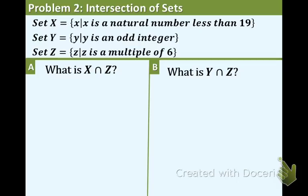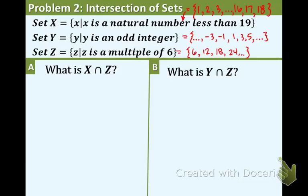Example two, we have set X. It is all natural numbers less than 19. Set Y is odd integers. And set Z is multiples of 6. So what I'm going to do now is list all of the numbers that apply for set X, Y, and Z. And you could do the same. Okay, so make sure you write this down.